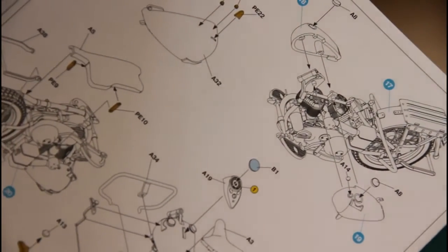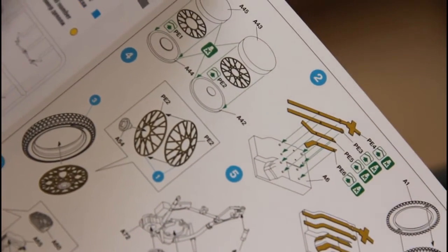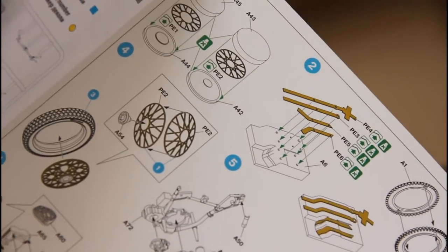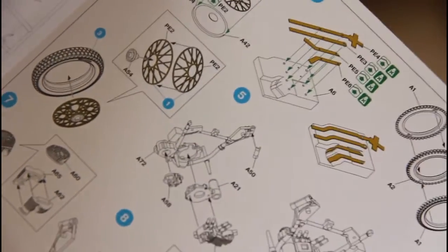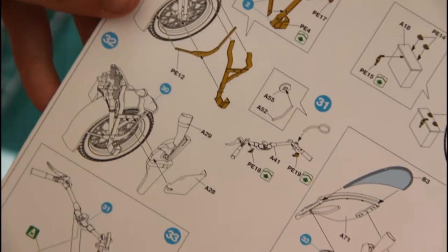As you can see, assembly is explained with these schematic images, and I think it won't be hard to follow them. By the way, as you can notice, some parts would need to be bent in order to look more realistic. This is related to PE parts because they are molded plain, so you have to make them three-dimensional.